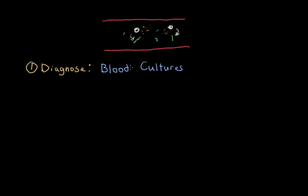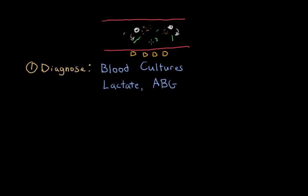Next, you should figure out how severe the shock is and whether organs are damaged. You'll get values such as serum lactate, which is important because it shows you tissue perfusion. When cells of the body are no longer getting oxygen, they resort to anaerobic metabolism — metabolism without oxygen — and a byproduct of that is lactate or lactic acid.